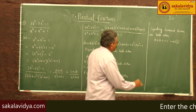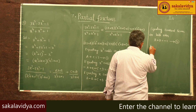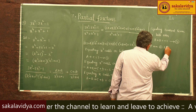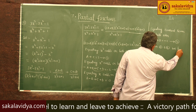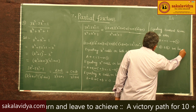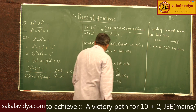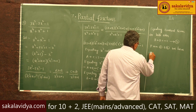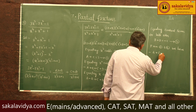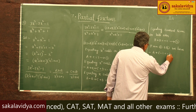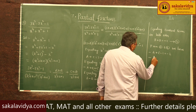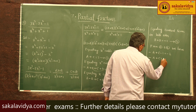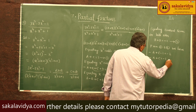From equations 2 and 4: replacing b + d with -1, we get -a + c - 1 = -2. So -a + c = -1 — equation 5.